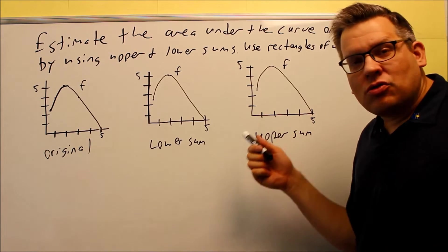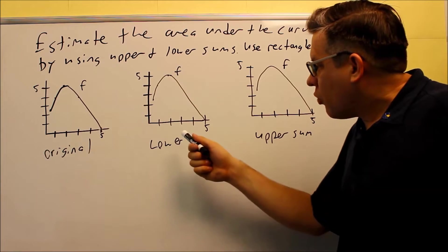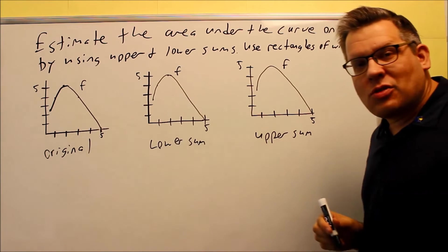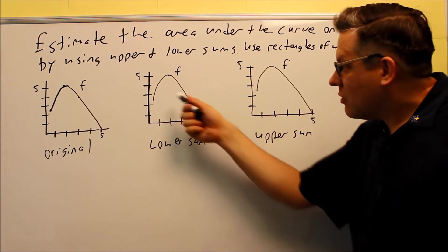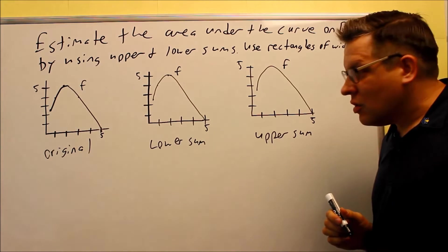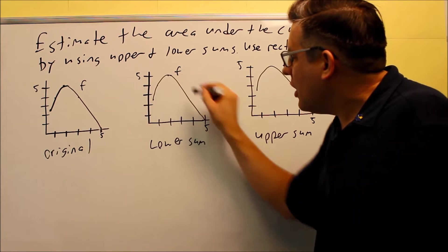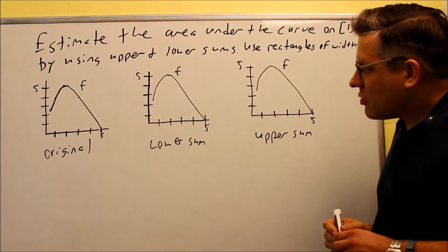Now, what you're going to have to do is you need to draw in the rectangles for each of these, and then we're going to take a look and estimate the area underneath by taking the area of each of those rectangles. Now, for lower sum, that means that the rectangles have to stay underneath the curve.